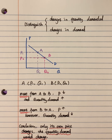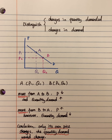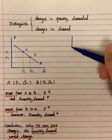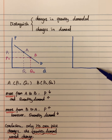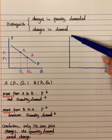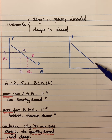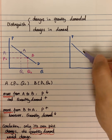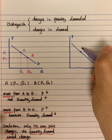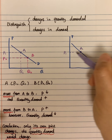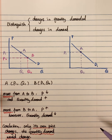Now let's talk about another case: the change in demand. Similarly, I draw a demand curve with quantity on the horizontal axis and price on the vertical axis. I mark this demand curve as D1. I find one point on this demand curve — point A — where price equals P1 and the corresponding quantity demanded equals Q1.